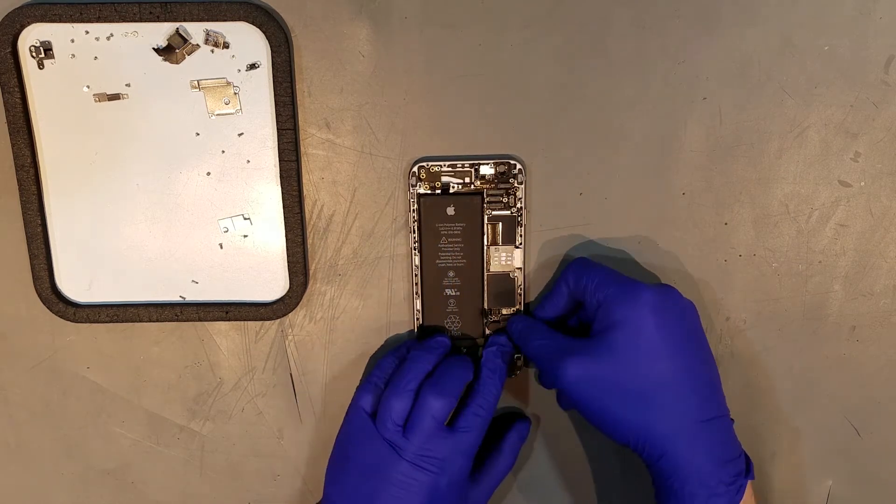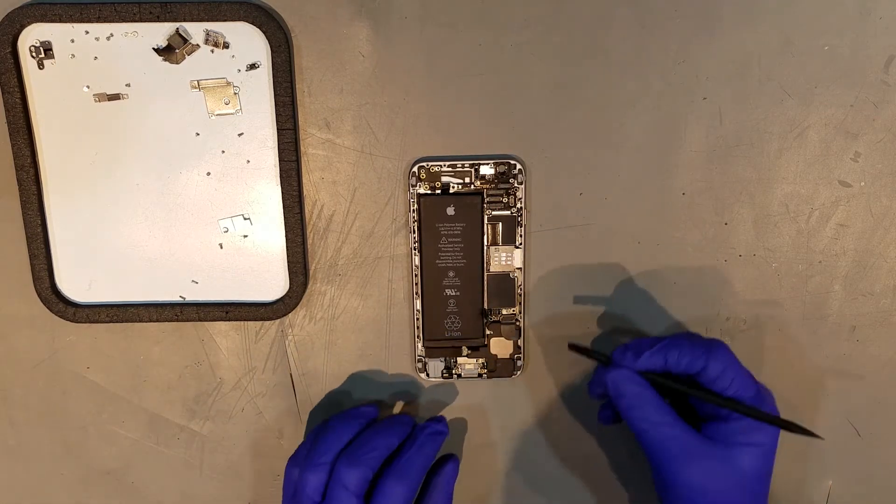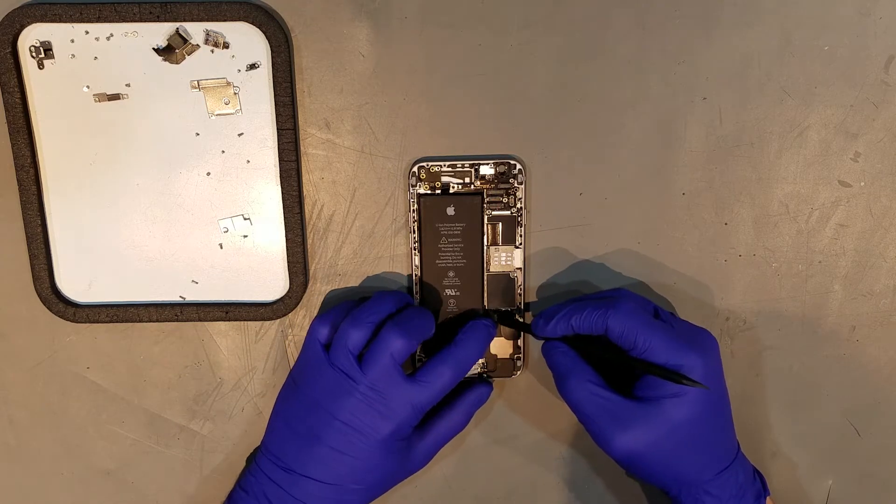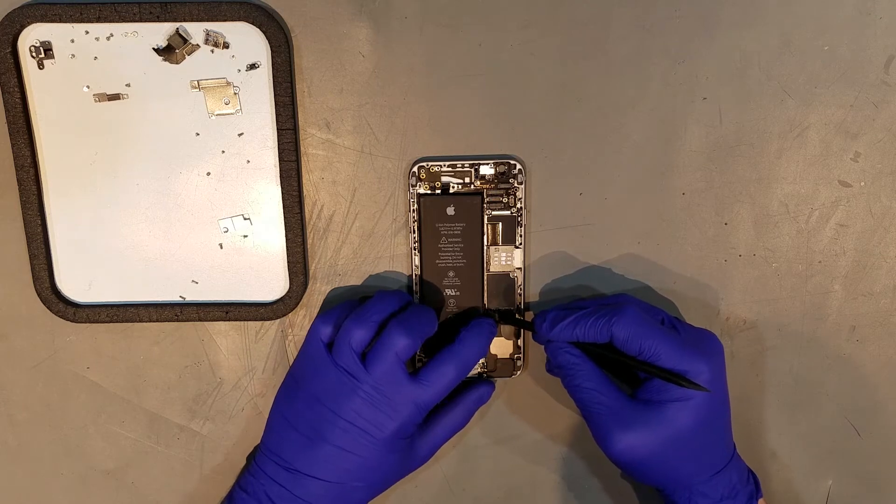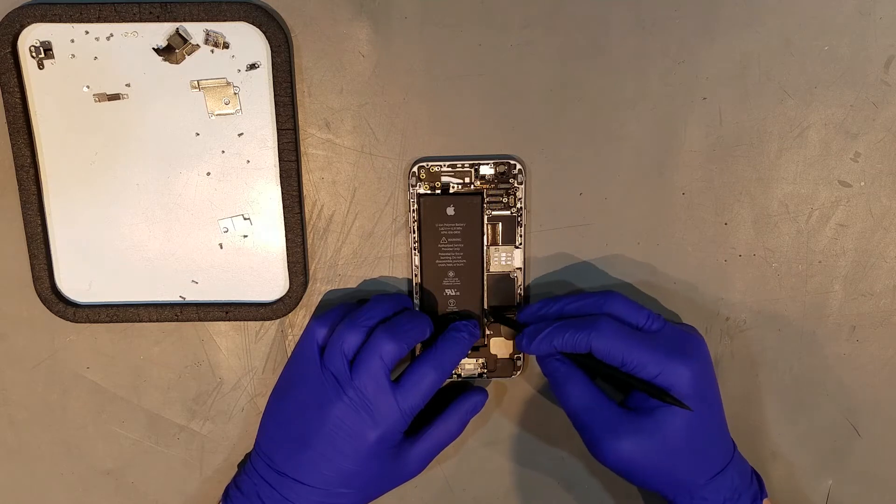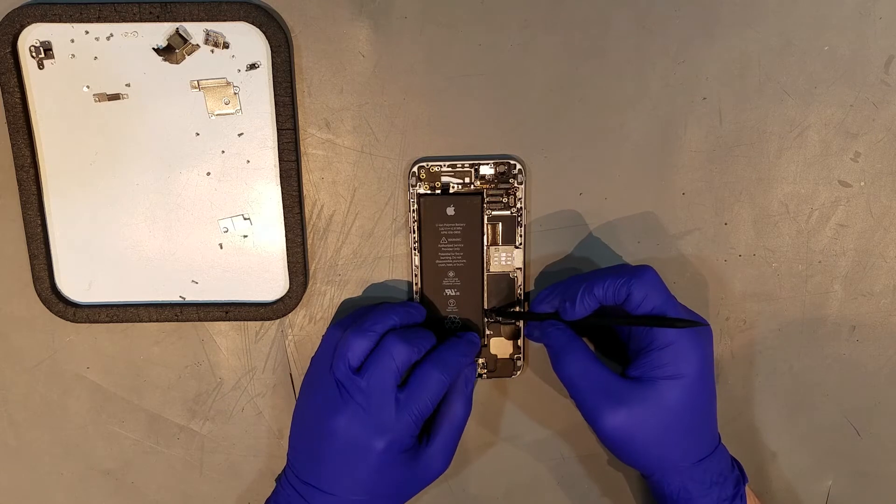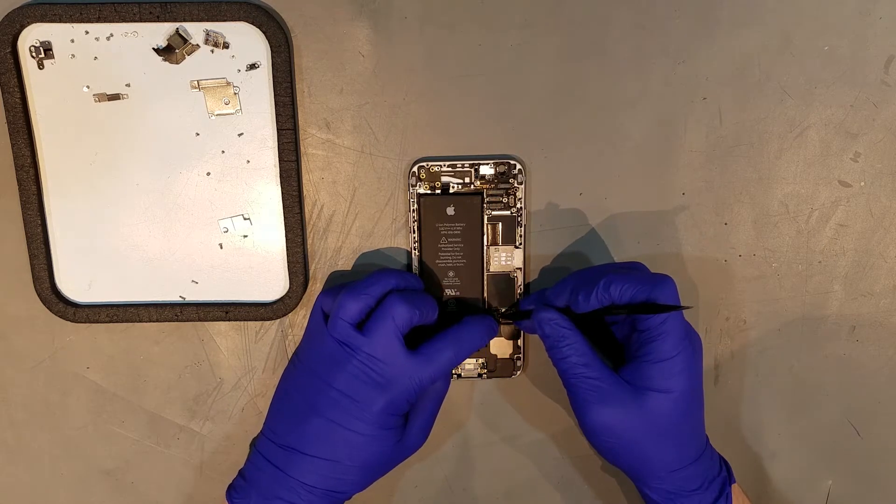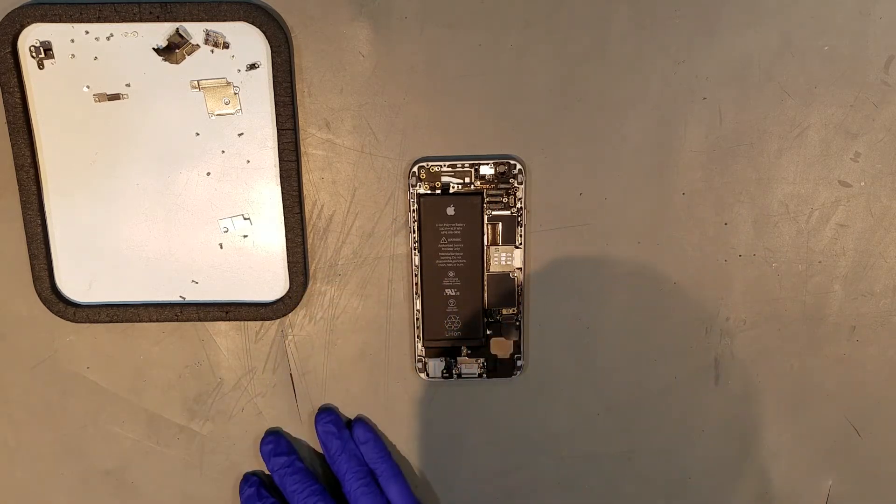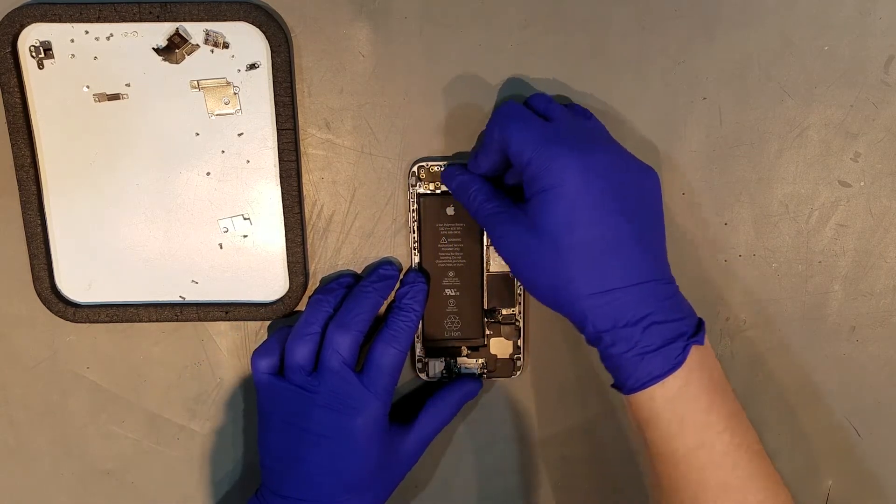Now the charge port and cellular antenna can be clipped back in. Then the two clips for the power and the volume buttons can be clipped back in and that metal connector at the top can be replaced along with the two Phillips screws to secure it in.